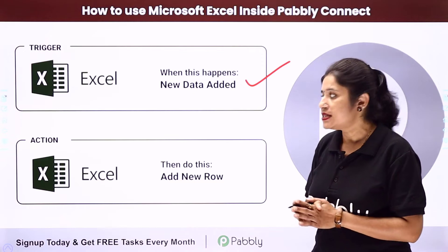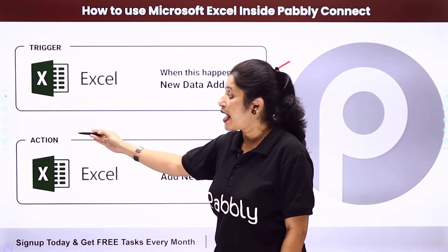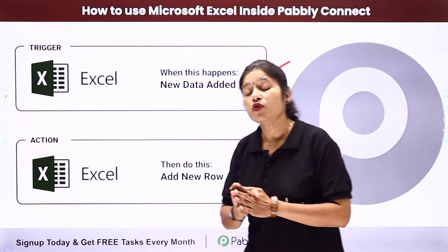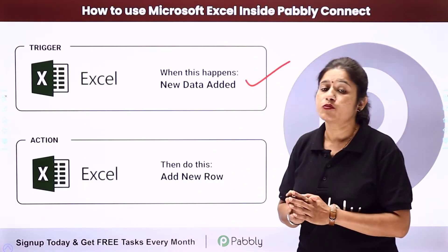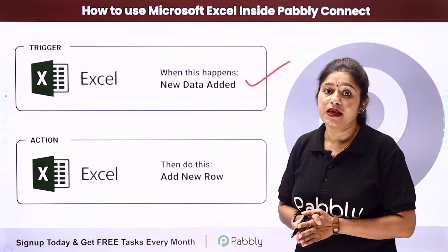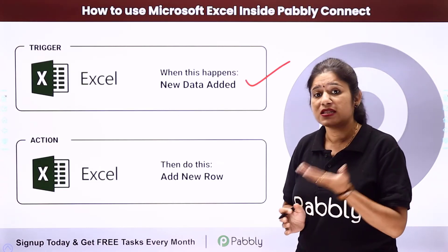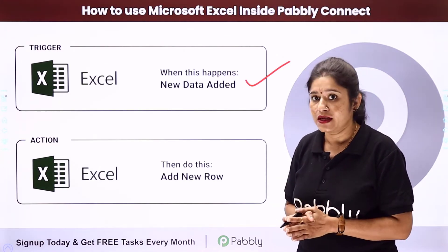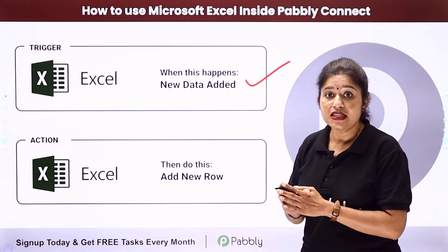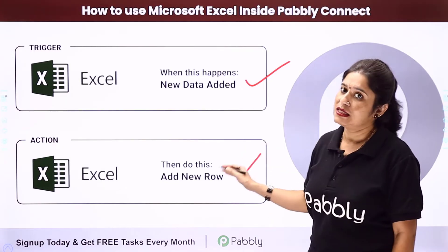In the second step we will see how we can use Microsoft Excel as an action application in Pabbly Connect. It means whenever you are receiving responses from any application — like CRM software, scheduling applications, chat or messaging applications, or any other application — how that same data can be added as a new row to your Excel spreadsheet.